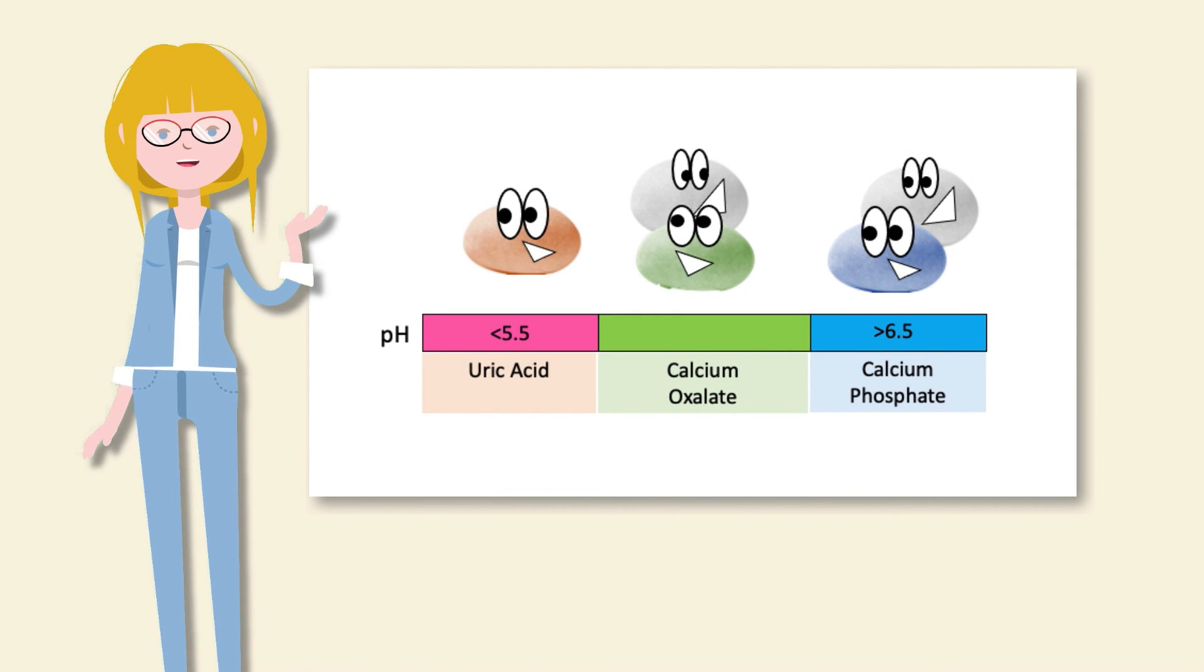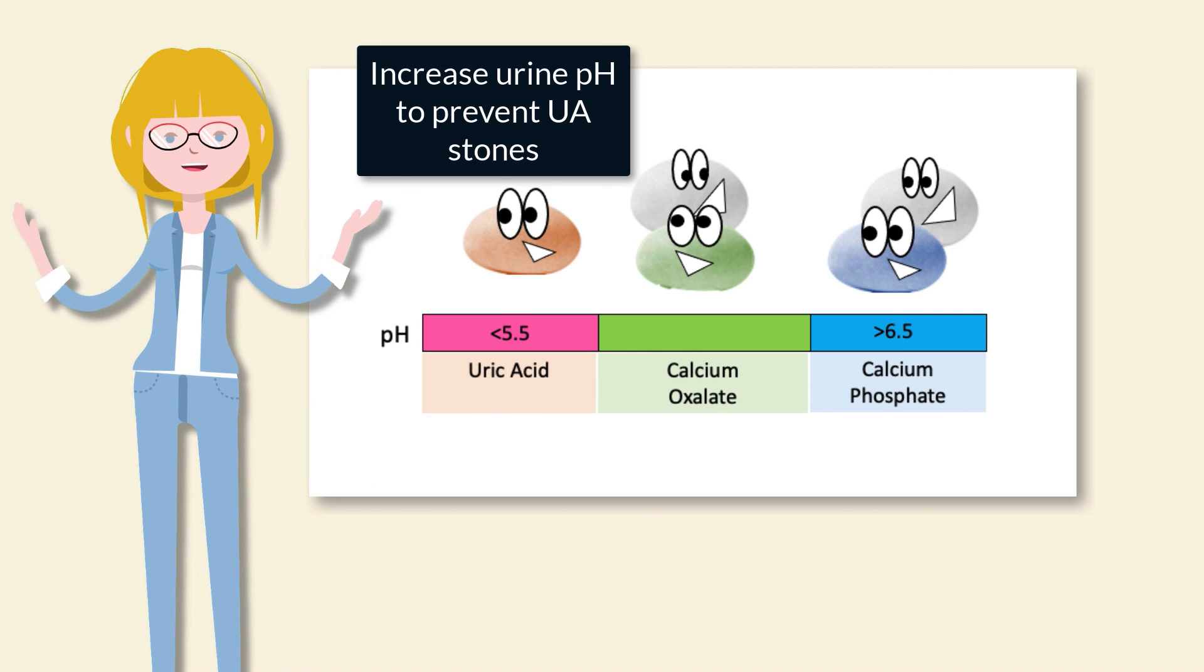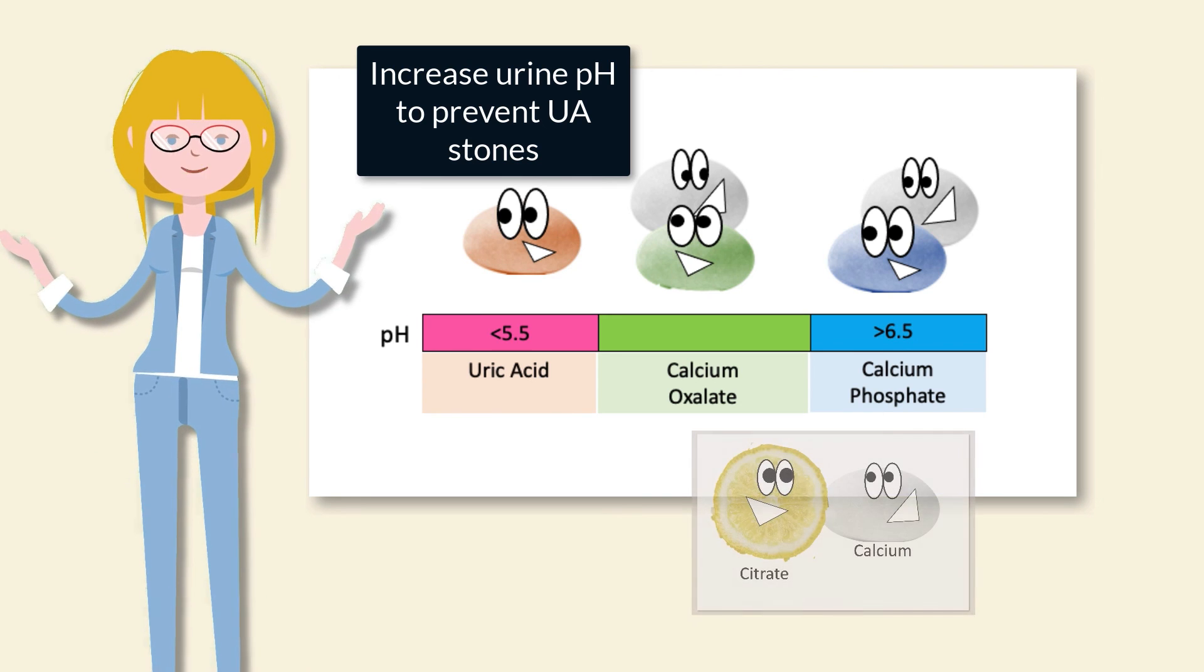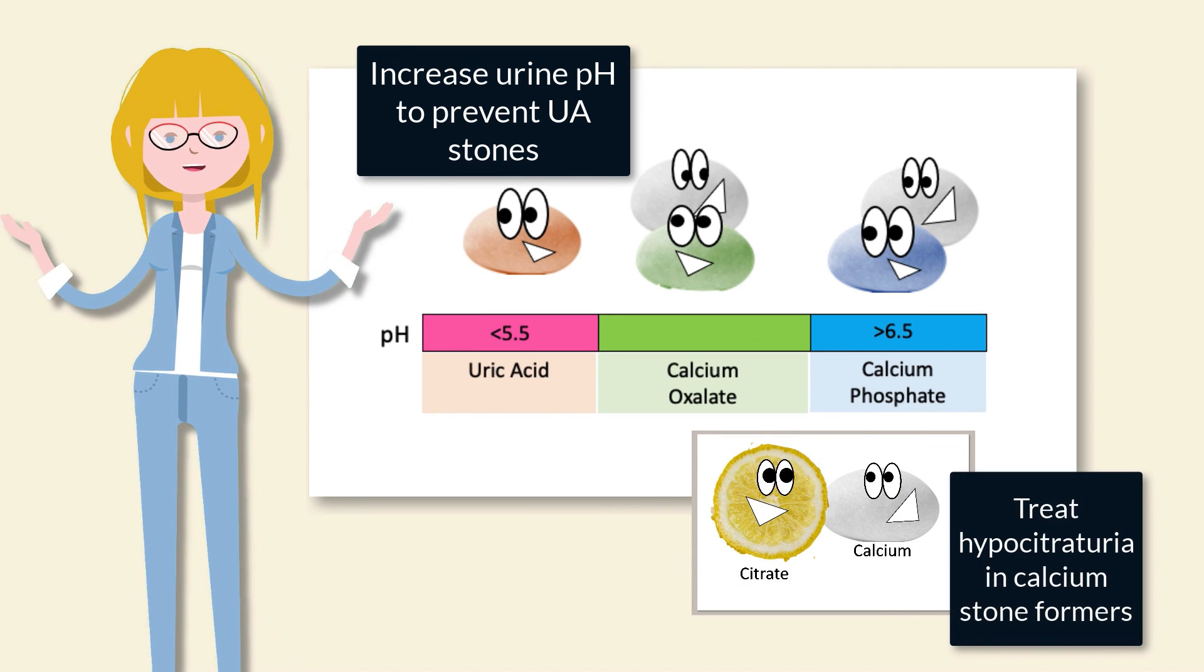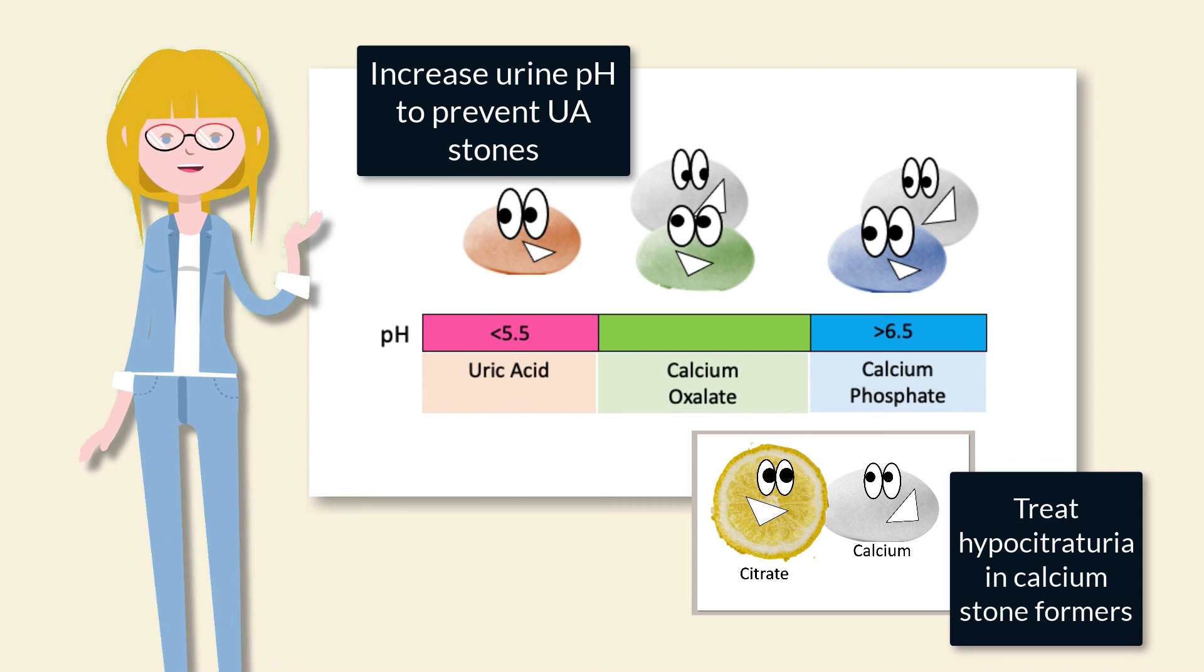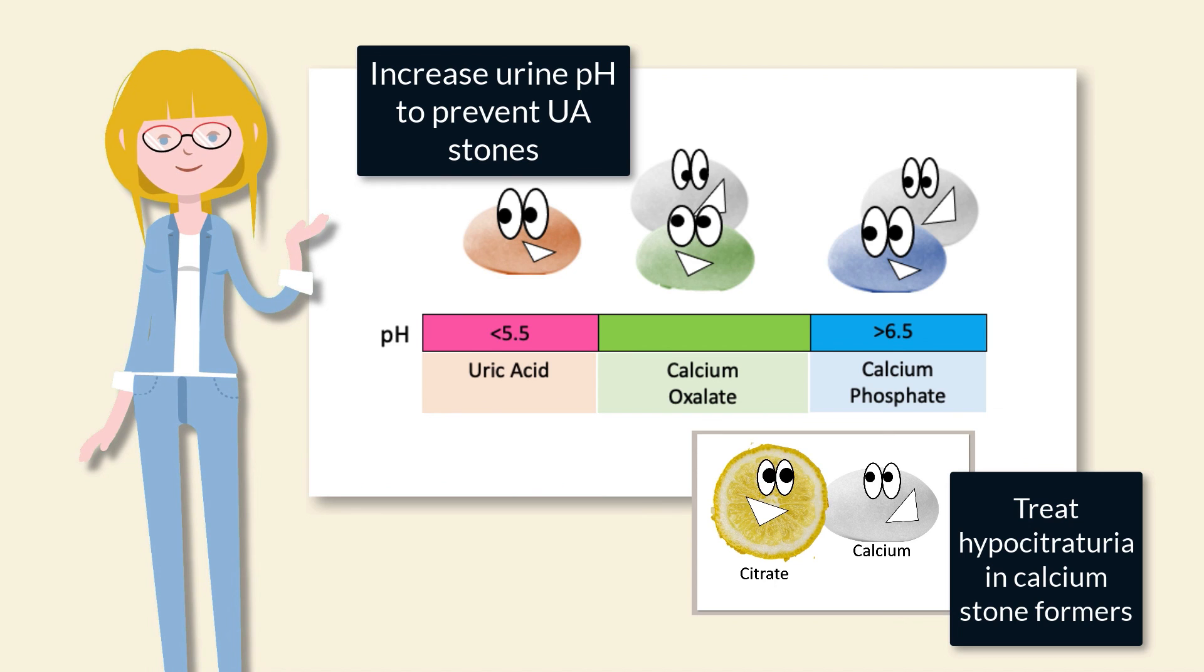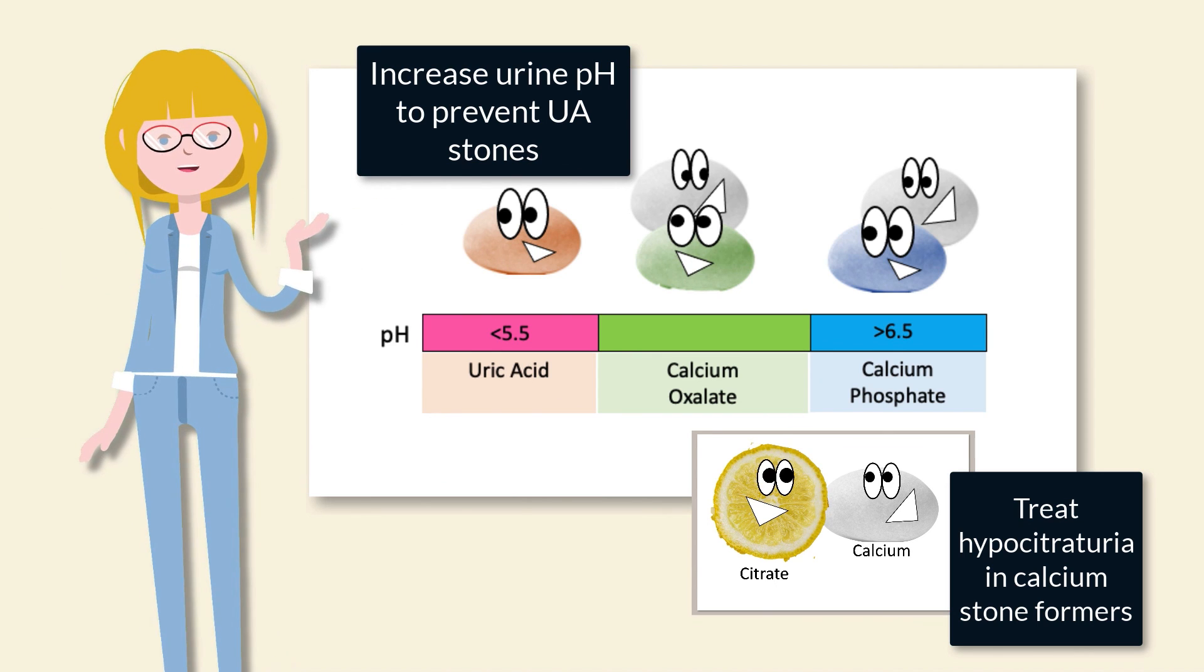So it's a tricky balance. But the key thing to remember is that the only time you truly alkalinize the urine is to prevent uric acid stones. But in calcium stone formers, citrate can be used not to change the pH but instead to bind calcium and prevent stone formation. So that was urinary alkalinization for kidney stones demystified for the win.